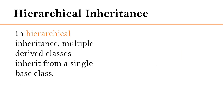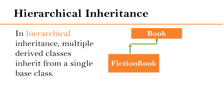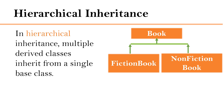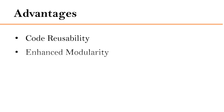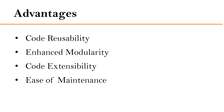Next is hierarchical inheritance, where multiple derived classes inherit from a single base class. In our example, Book is the base class and FictionBook is one derived class. If I create one more class NonFictionBook also derived from Book, then this becomes hierarchical inheritance. Please note, multiple inheritance is not supported in C# — it is achieved through interfaces. Inheritance offers several advantages: code reusability, enhanced modularity, code extensibility, and ease of maintenance.